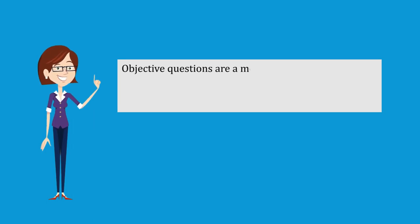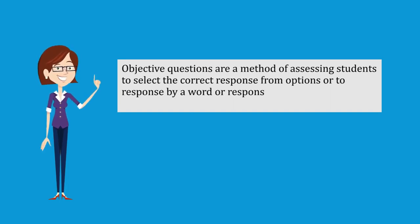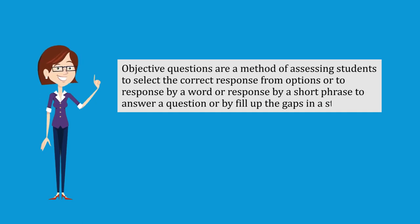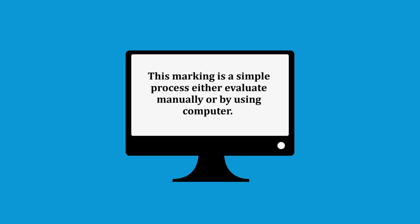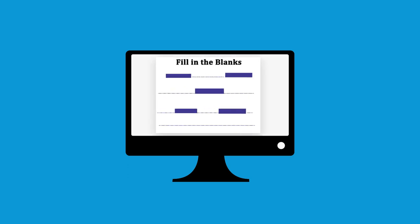Objective questions are a method of assessing students where they select the correct response from options, or respond with a word or short phrase to answer the question, or fill up a gap in a statement. The marking is a very simple process, either evaluated manually or by computer. For online programs, everything will be computer-based assessment, where students click on the correct answer or simply fill in the gap.